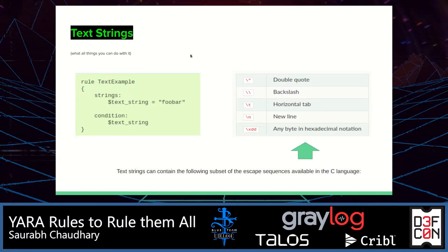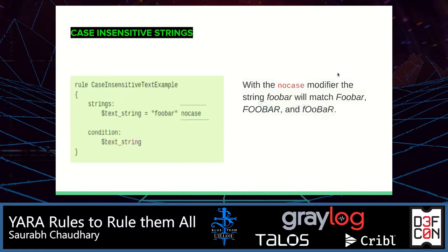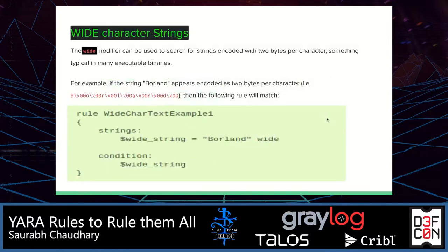Text strings can contain the following subsets of escape sequences available in the C language: double quotes, backslash, horizontal tab, newline, and hex byte notation. As we discussed, the nocase modifier — for example, here you can see a rule trying to identify 'UBER', and adding nocase will identify UBER with uppercase and UBER with jumbled case. Coming to wide character strings: a wide character is a data type that generally has a greater size than the traditional 8-bit character. The increased data type size allows for the use of larger coded character sets, so using wide will solve your problem here.